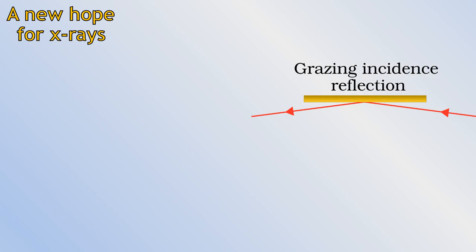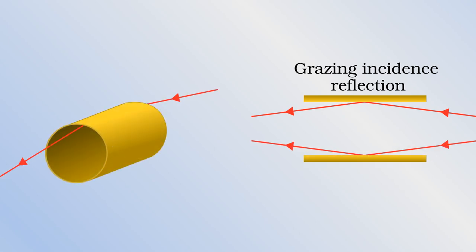For X-rays, there is a hope. They can be focused by reflection, but only with so-called grazing incidence, where the ray comes in almost parallel to the surface of the mirror, and its path is deflected by a very slight amount. The simplest solution is to create a cylindrical optic. The X-rays are reflected inwards at grazing incidence by the inside of the cylinder, which is polished and coated with gold.